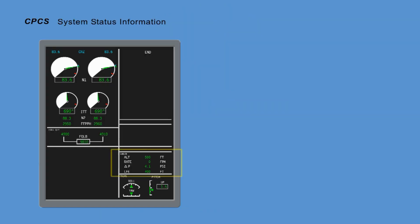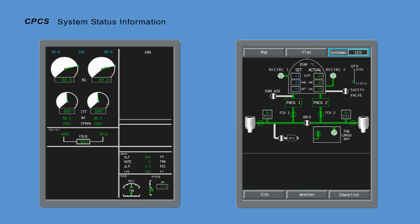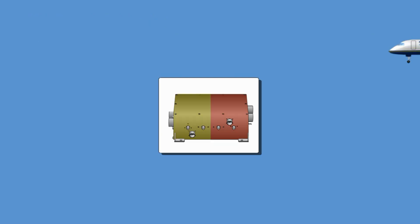System status information is indicated continuously on the ICUS and the ECS synoptic page, while various messages will be displayed on the ICUS in the event of failures.